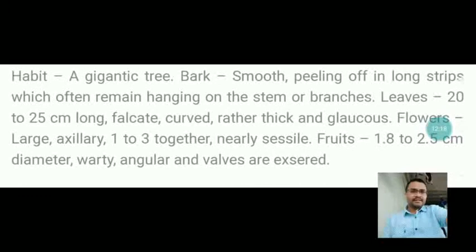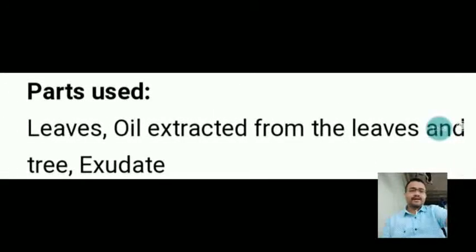The habit is that of a gigantic tree. The bark is smooth, peeling off in long strips which often remain hanging on the stem or branches. Leaves are 20 to 25 cm long, falcate, curved, rather thick and glaucous. Flowers are large, axillary, one to three together, nearly sessile. Fruits are 1.8 to 2.5 cm in diameter, warty and angular. Parts used are leaves, oil extracted from the leaves, and tree exudate.